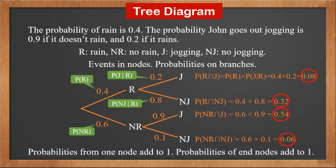Probabilities of all end nodes should add to 1. The sum of 0.08, 0.32, 0.54, and 0.06 is 1.